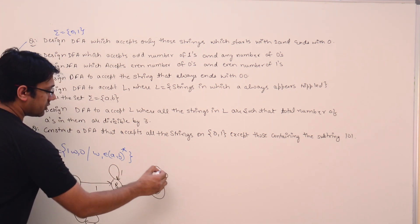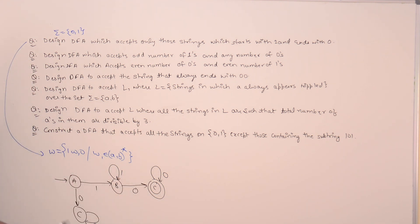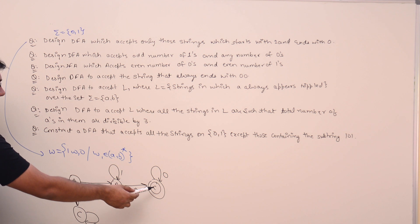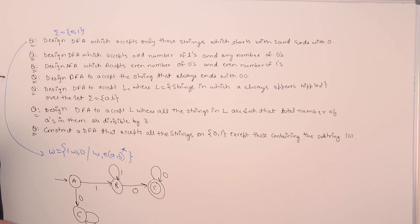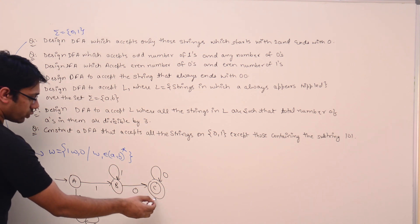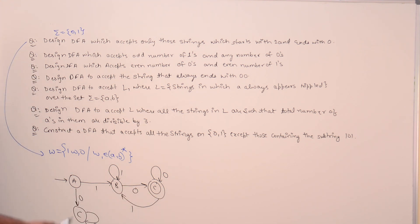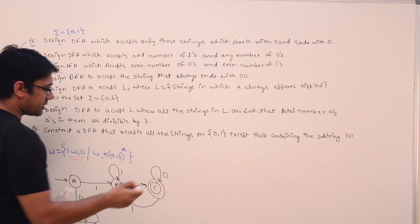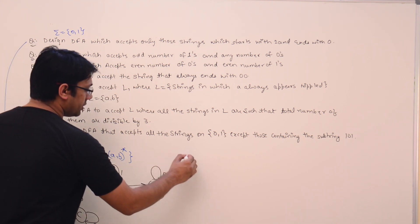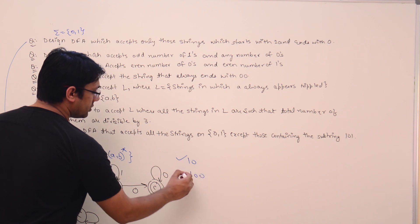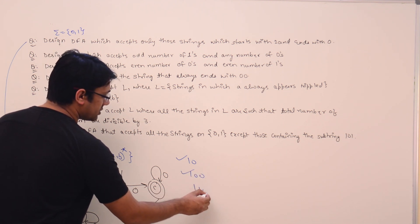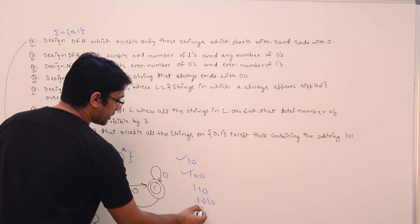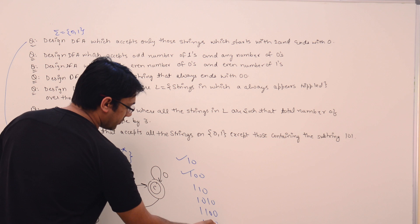Whatever number of 0s we get after reaching state C, we remain at state C, because if we are getting 0s the string is still ending with 0. But if we get at least one 1, we go back to state B because we assume the string is no longer ending with 0. For example, we can take strings like: 1 0, 1 0 0, 1 1 0, 1 0 1 0, 1 1 0 0.